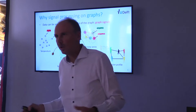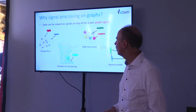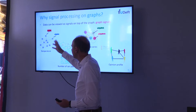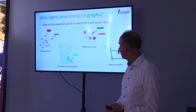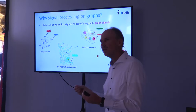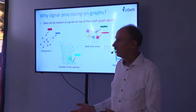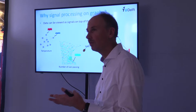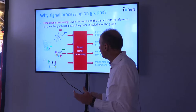The data itself can be viewed as signals on top of these graphs. The graph is your new domain instead of the Euclidean domain. In sensor networks each node measures temperature over time; in road networks you measure car counts at crossings; in brain networks it could be fMRI time series; in social networks, opinion profiles. These signals are often temporal, so there are two domains at play — the graph domain and the temporal domain.